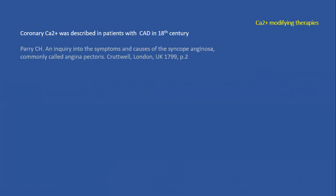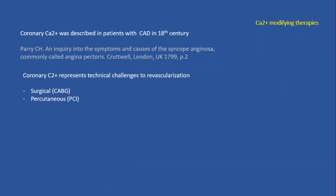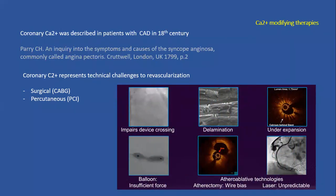Coronary calcium is nothing new — it was described in 1799 in patients with angina and syncope anginosa, so nothing we haven't seen before. It represents significant challenges from surgical and percutaneous perspectives. When lesions are very calcified and tight, we can't cross or expand them with a regular balloon. We see so-called dog boning on a balloon, stent malapposition, stent underexpansion with residual significant stenosis, perforations, subsequent tamponades, and wire bias within vessels.